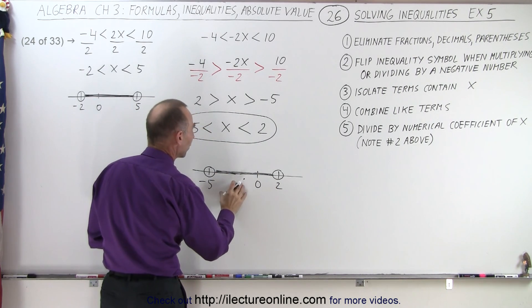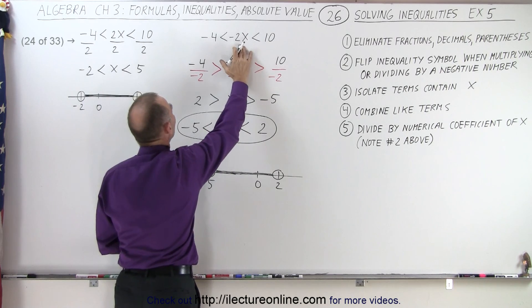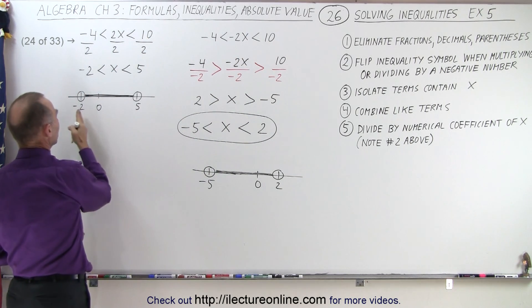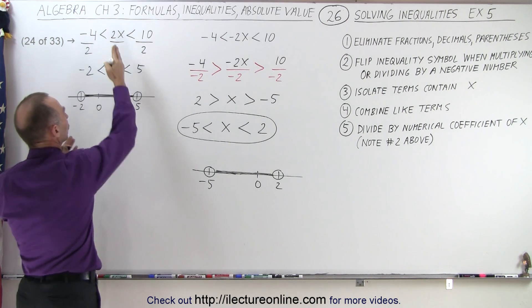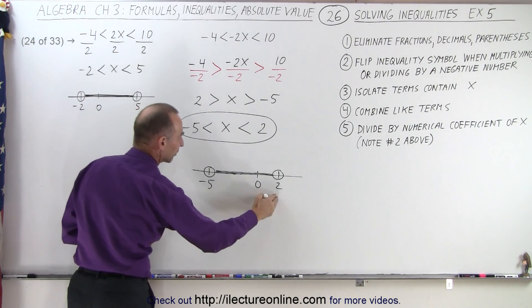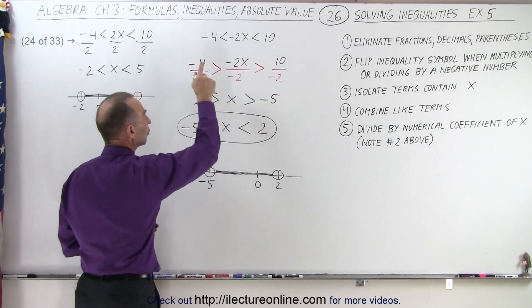And notice the solution is somewhat different now, because we have a negative 2x instead of a positive 2x. Notice instead of the values between negative 2 and 5 being the solution for that inequality, it's now the values between negative 5 and positive 2, which are the solution to that inequality.